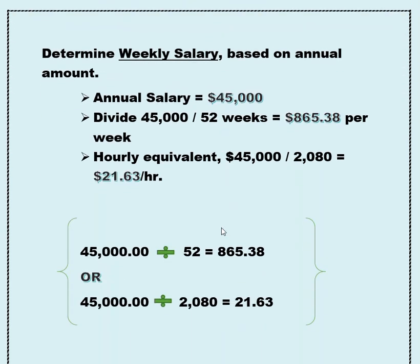Onto the salary calculation. To determine a weekly salary, you're going to base it on an annual amount. We're going to use $45,000 as an example. If you're making $45,000 a year, you divide that by 52 weeks, and that gives you your weekly gross pay amount of $865.38. Your hourly equivalent will be $21.63 an hour.